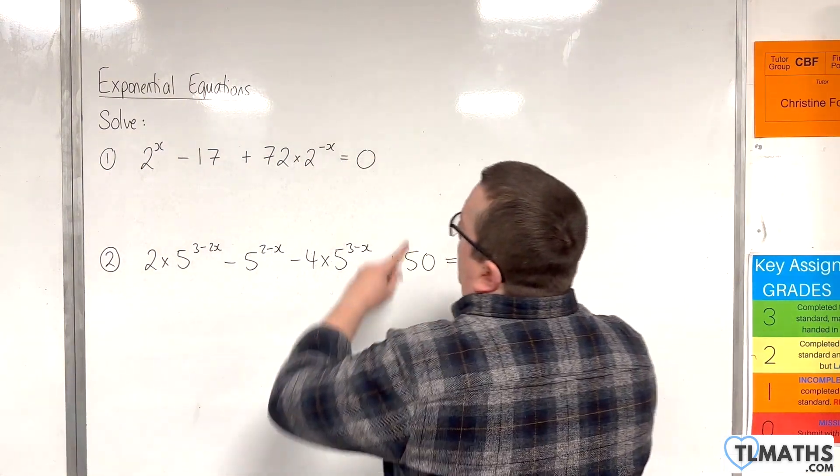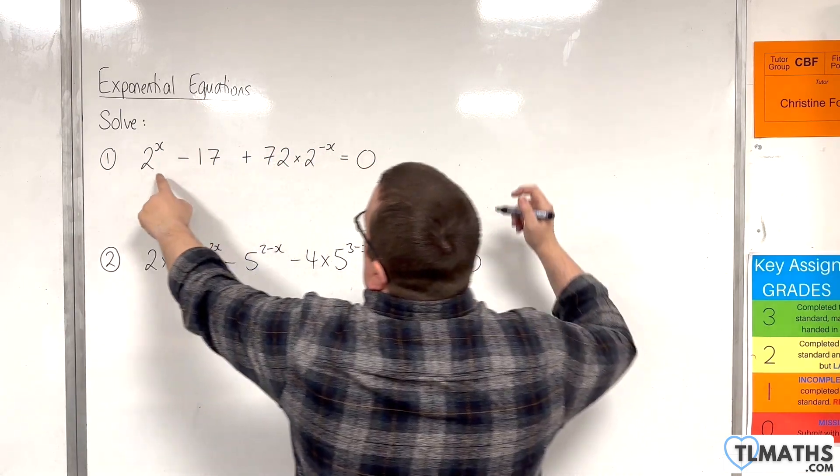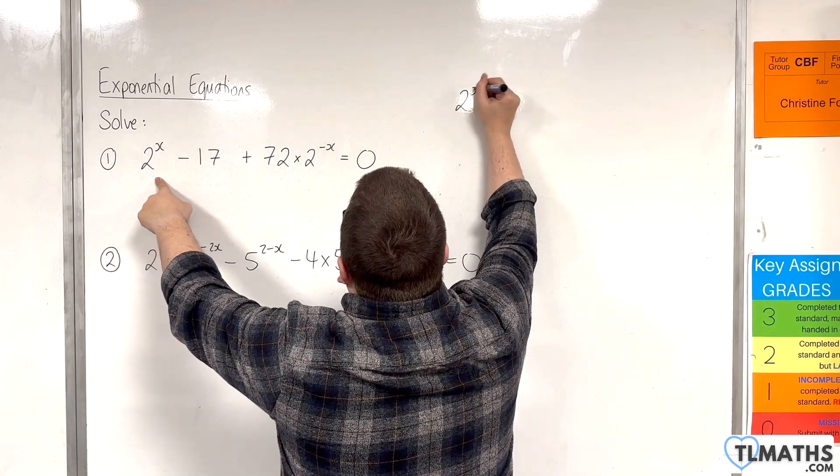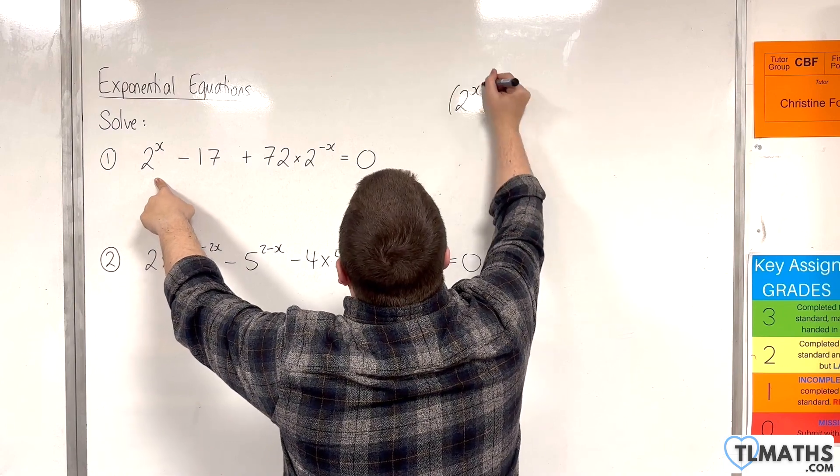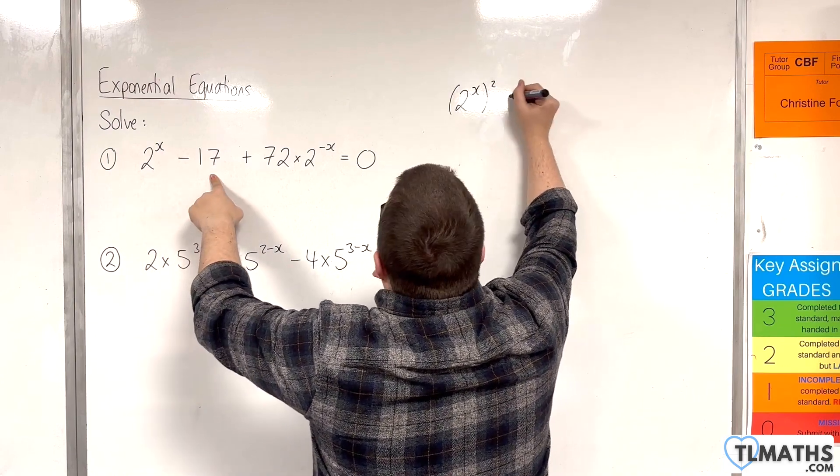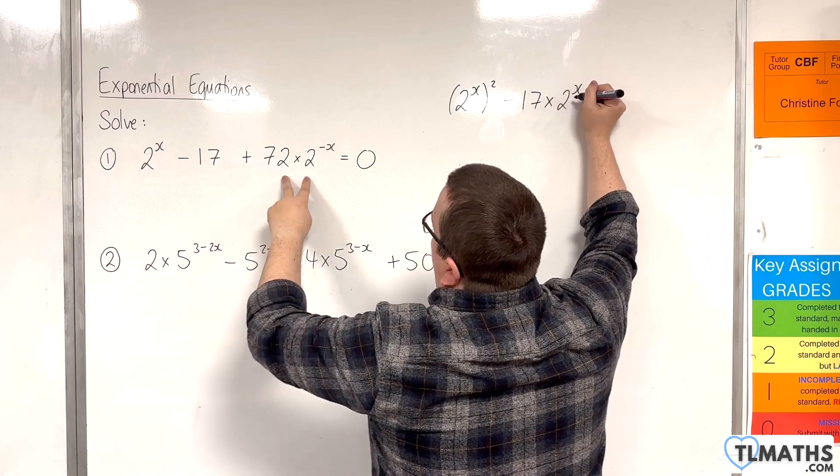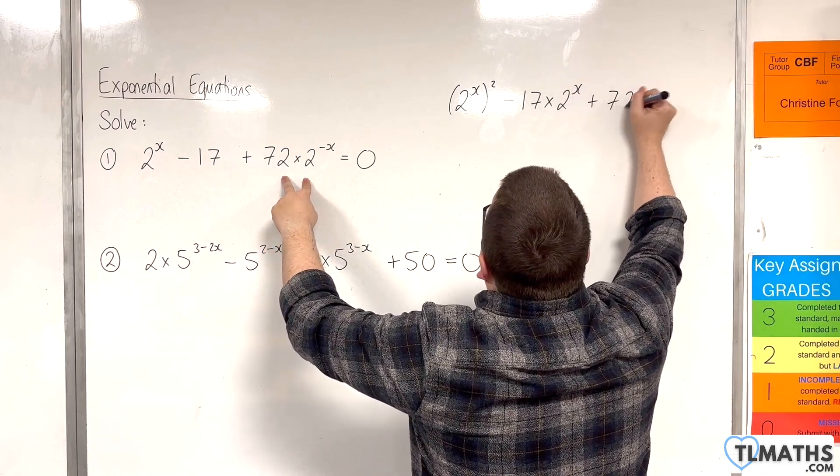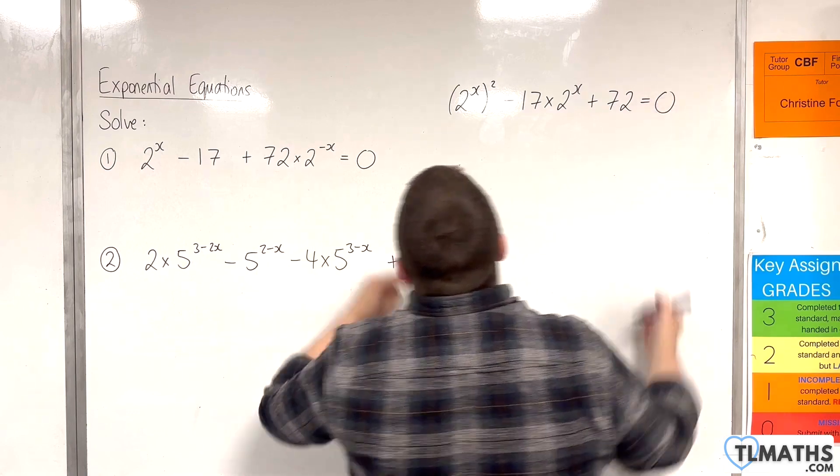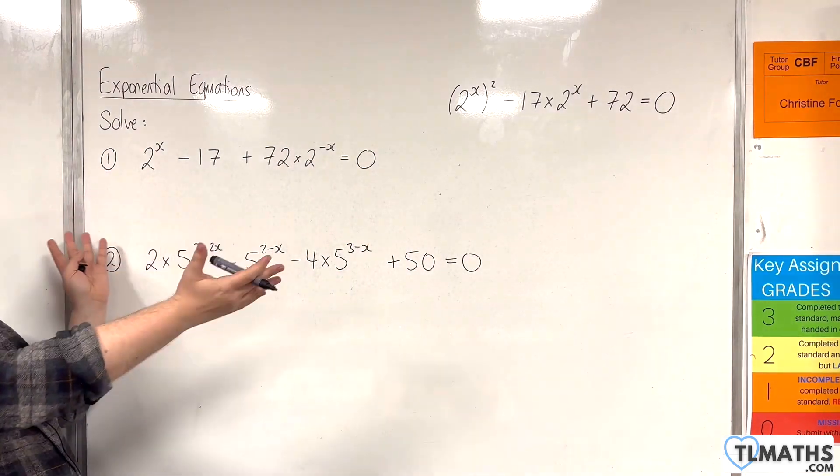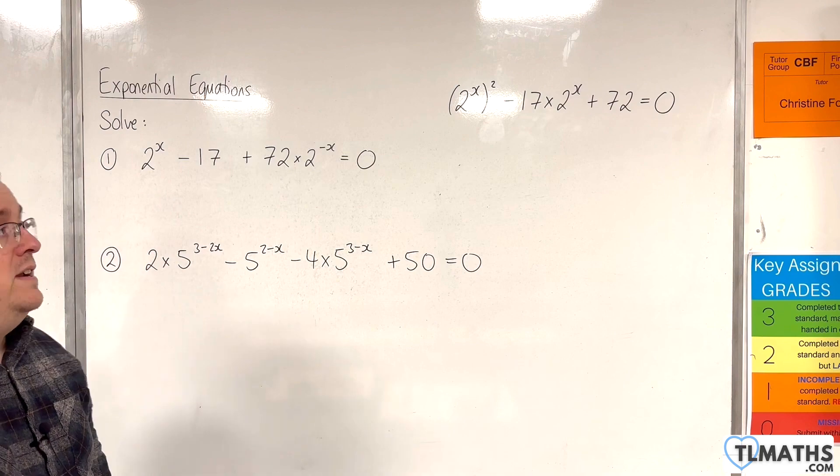So, I'm going to multiply everything through by 2^x. So, I'll get 2^x times 2^x, so 2^x squared. Then, take away 17 lots of 2^x, and then just plus 72 on the end. Equals 0. And now, it's in the form that we recognize.